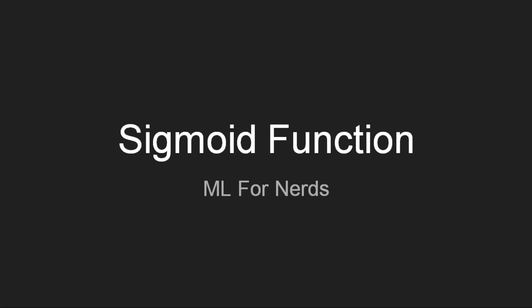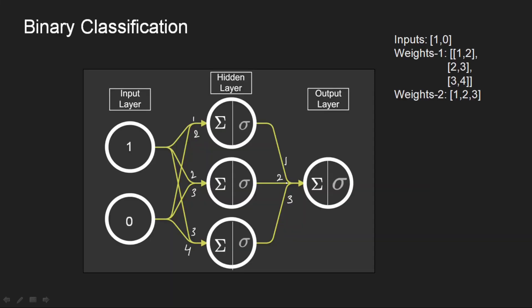Hello everyone, my name is Siva and welcome to my channel. This is part of the series 'Neural Network from Scratch in Python,' where we discuss and implement neural networks in pure Python. In the previous video we covered the step activation function and its drawbacks. Now we'll look at one of the oldest and most popular activation functions: the sigmoid.